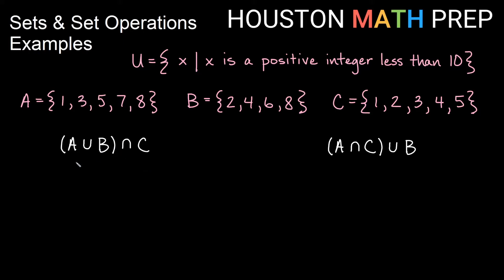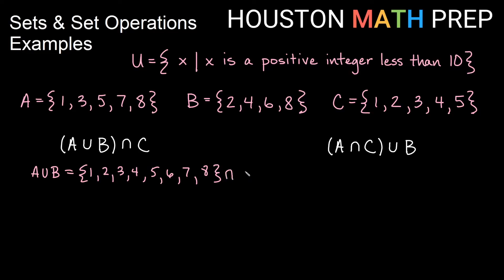Let's do a bit more practice with parentheses. I have A union B — I do that first — and then I will take that intersect C. A union B gives all things in A or B or both: 1, 2, 3, 4, 5, 6, 7, and 8. Now I take that and intersect it with C — looking for things in 1 through 8 that are also in the C list. That turns out to be the entire set C: 1, 2, 3, 4, and 5 are in both lists. So (A union B) intersect C is the set {1, 2, 3, 4, 5}.